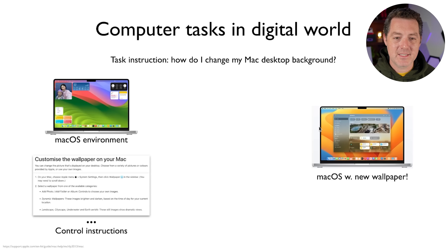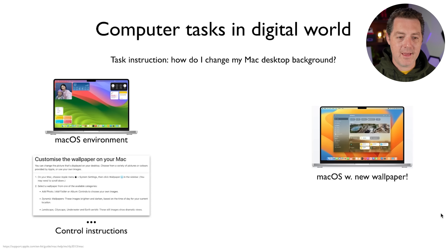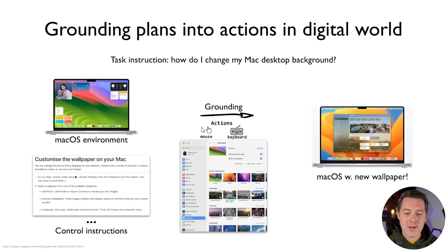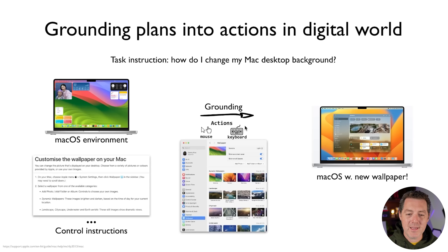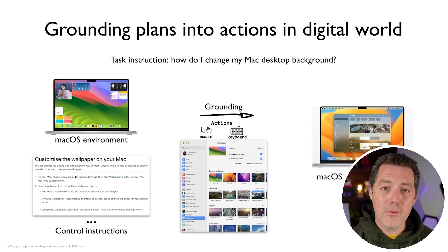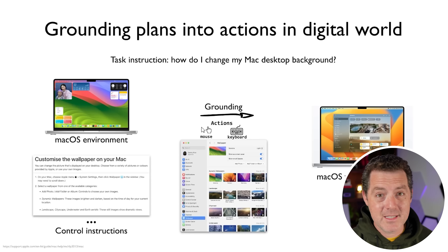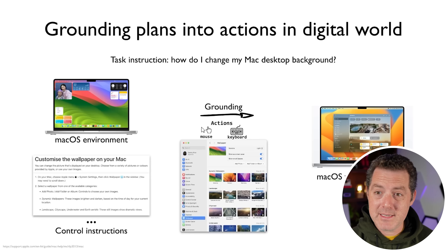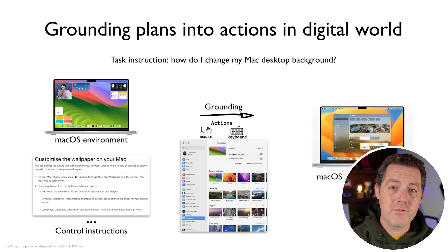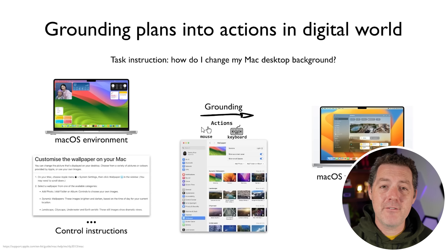Now let's look at a digital task. The task instruction is: how do I change my Mac desktop background? We have the macOS environment, the control instructions from Apple's help website, and the final outcome of macOS with a new wallpaper. But how do we get from instructions to the executed task? We need grounding, and in this case grounding comes in the form of mouse and keyboard. Mac and Windows are closed systems, so typically what happens is a screenshot is taken, a grid is placed over it, and the LLM tells the mouse where to move — but it's all done through accessibility features and is very imprecise.